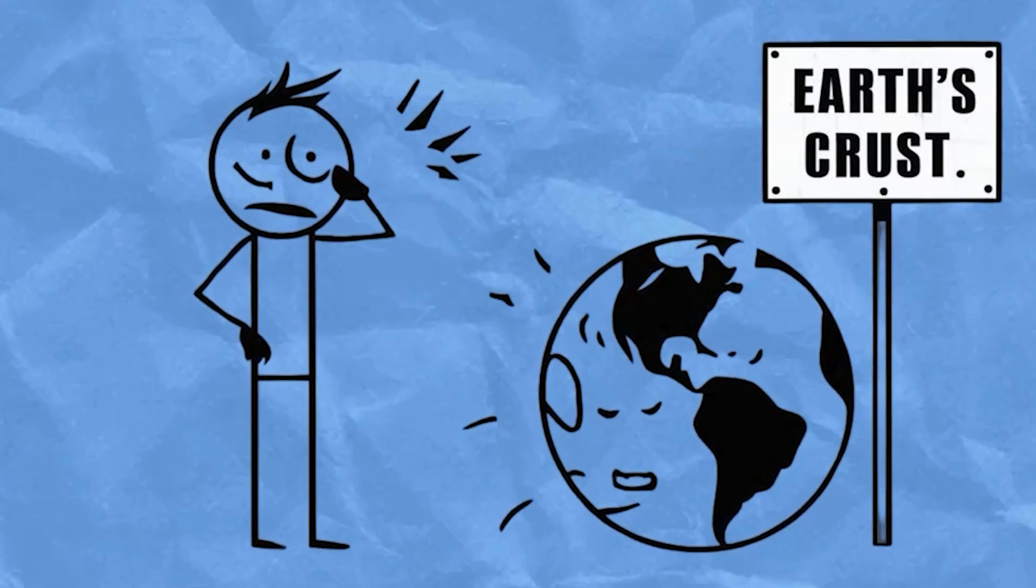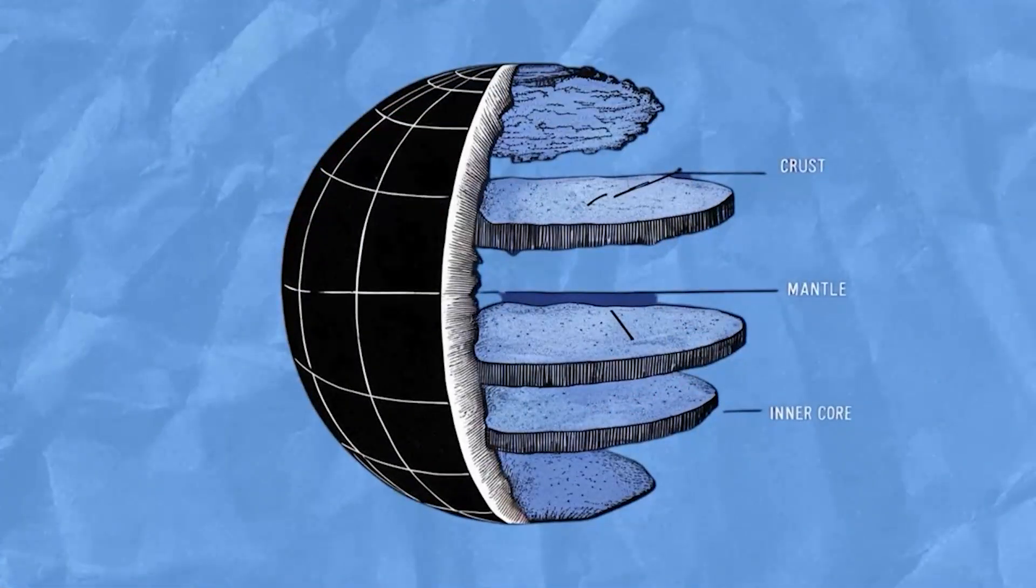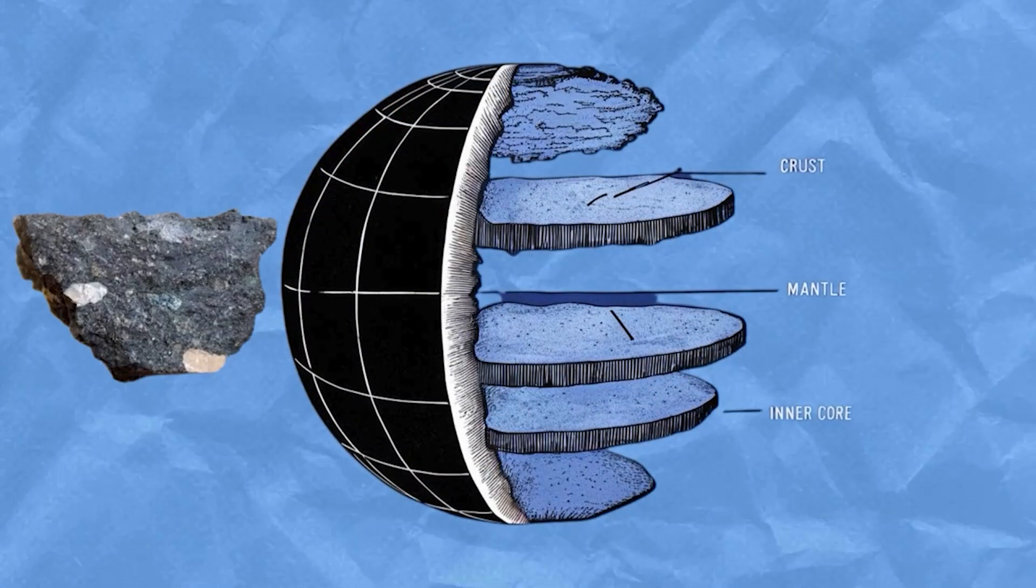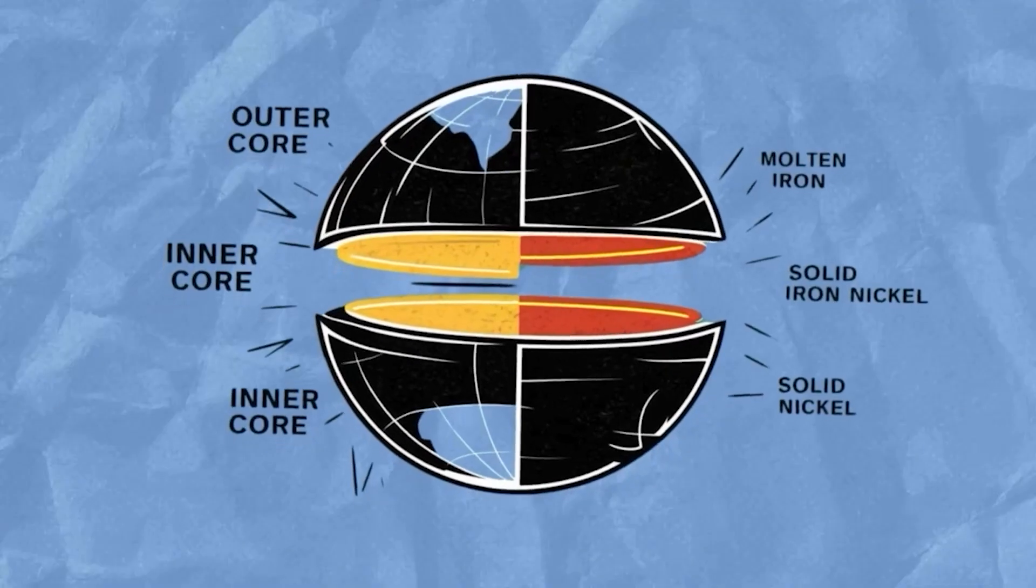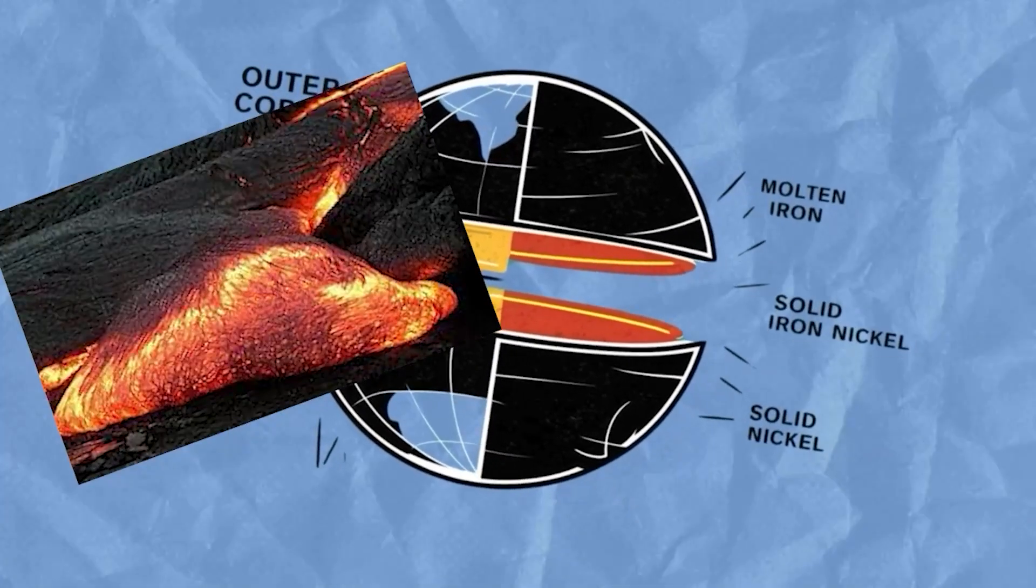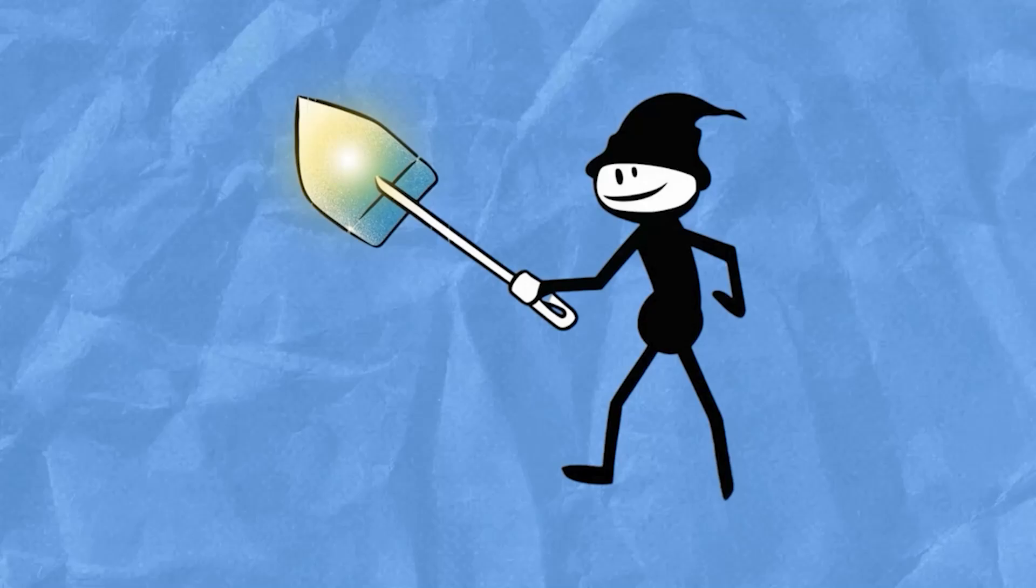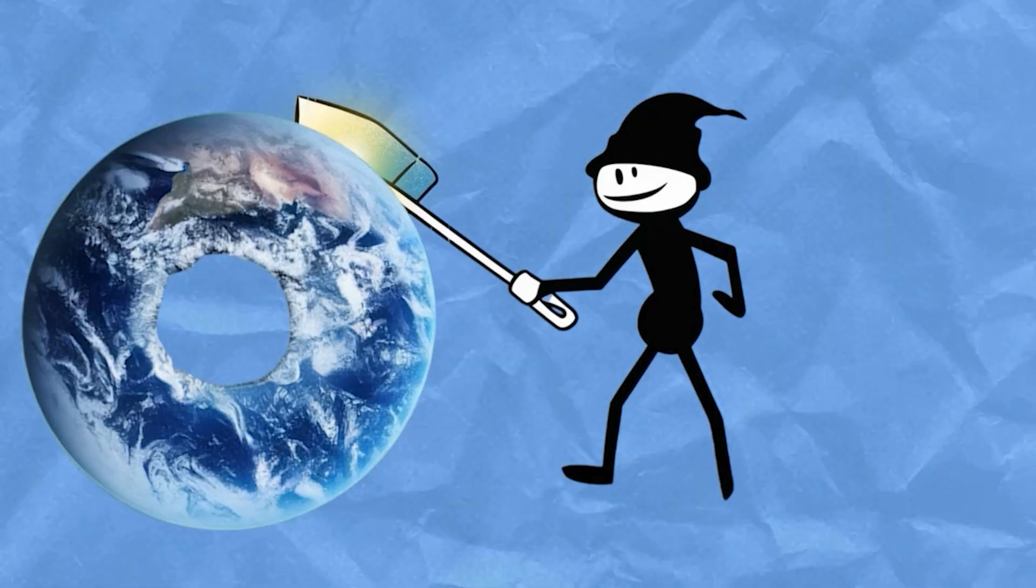The Earth's crust alone is several miles thick, and beneath that lies the mantle, which is composed of semi-solid rock, and the outer and inner cores, which are incredibly hot and made of molten and solid iron and nickel. However, let's imagine for a moment that we could somehow dig this hole.